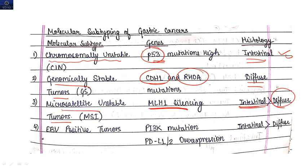Then comes Epstein-Barr virus positive tumors. p53 mutation is seen, PD-L1/2 overexpression is seen here, and it is also mostly of intestinal type. It may be diffuse but mostly of intestinal type.